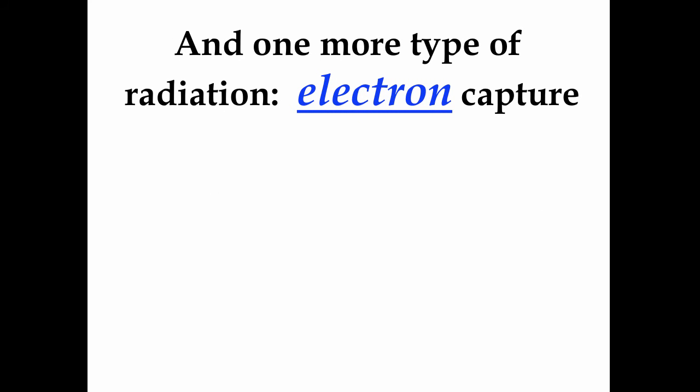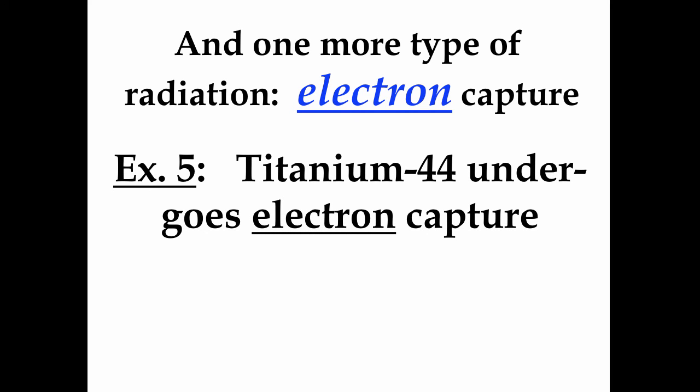One more type of radioactive process is called electron capture. It is what it sounds like: a nucleus actually captures one of its own inner shell electrons. This is the only type of radioactive decay that doesn't start with just one reactant and make two products. We actually have two reactants in this case.